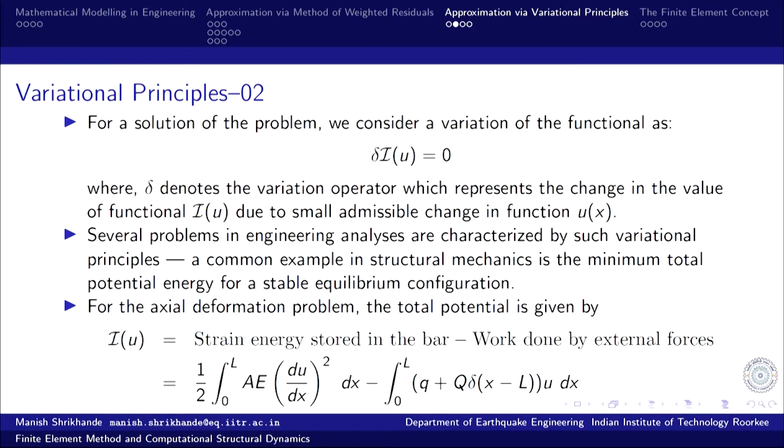Several problems in engineering analysis are characterized by suitable variational principles. A common example in structural mechanics is the principle of minimum total potential energy: the stable equilibrium configuration of any body deforming under external loads is characterized by minimum total potential energy. Every system strives to achieve the state of minimum total potential energy, which corresponds to the stable equilibrium configuration.